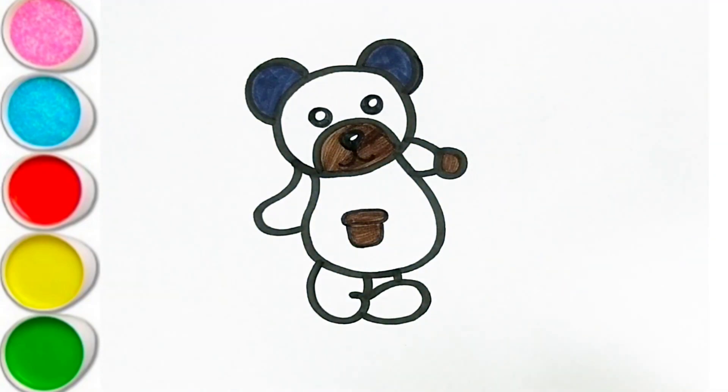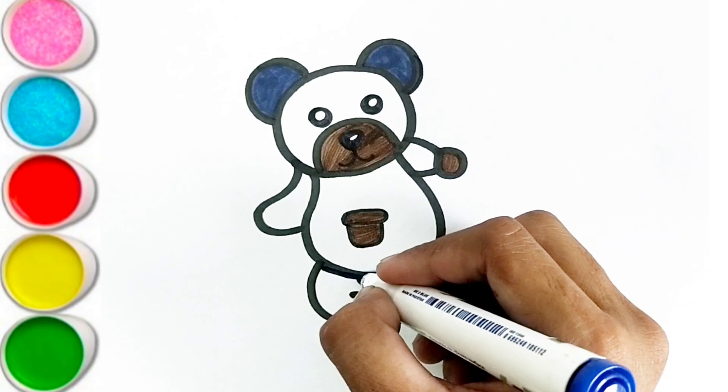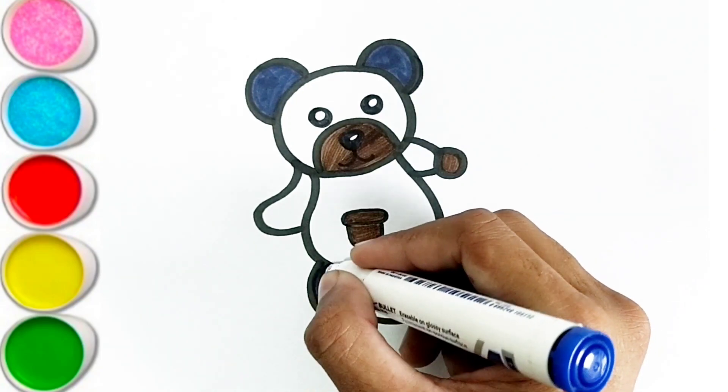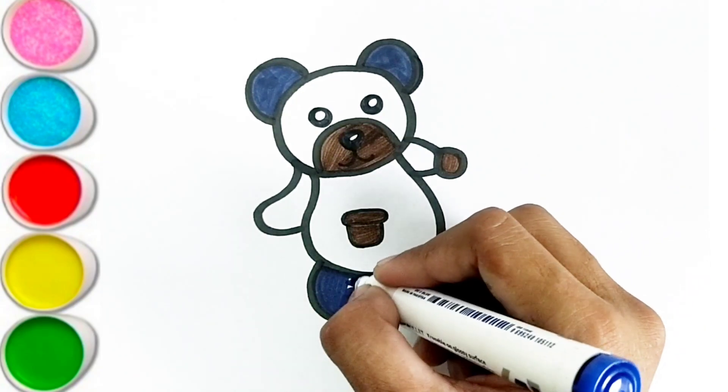Y is for yellow, y, y, yellow. Z is for zebra, z, z, zebra.